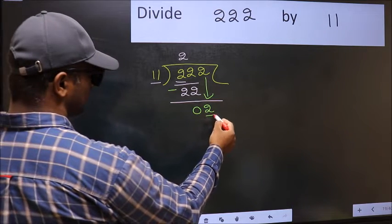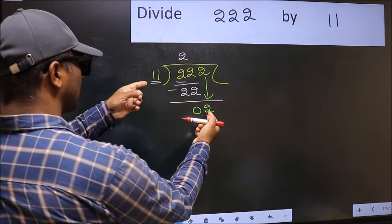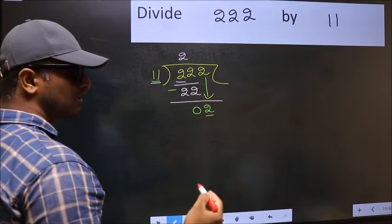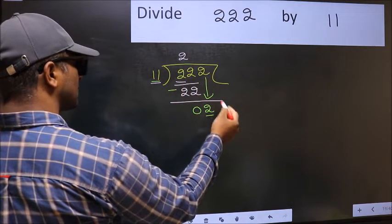Here we have 2 and here 11. 2 is smaller than 11. So, what many do is, they directly put dot and take 0.